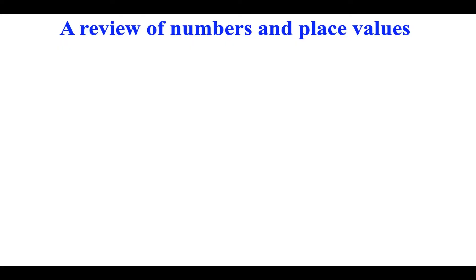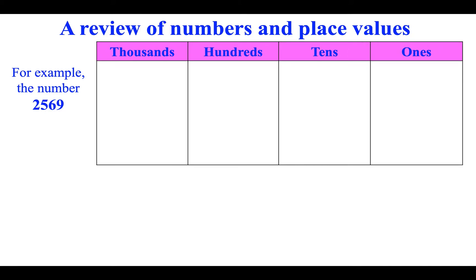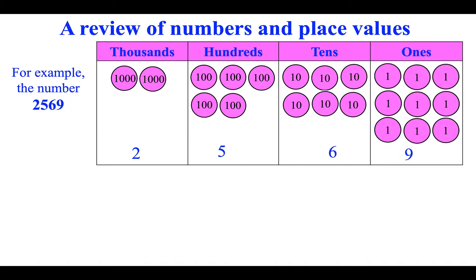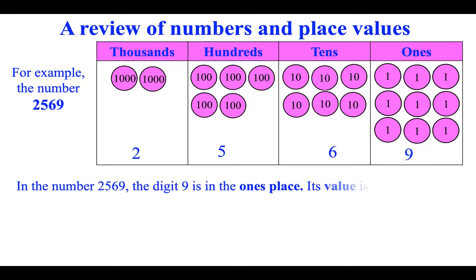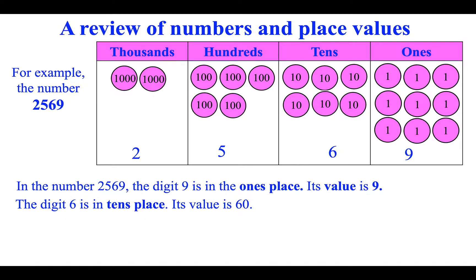A review of numbers and place values. For example, the number two thousand five hundred sixty-nine has two thousands, five hundreds, six tens, and nine ones. The digit nine is in the ones place; its value is nine. The digit six is in the tens place; its value is sixty.